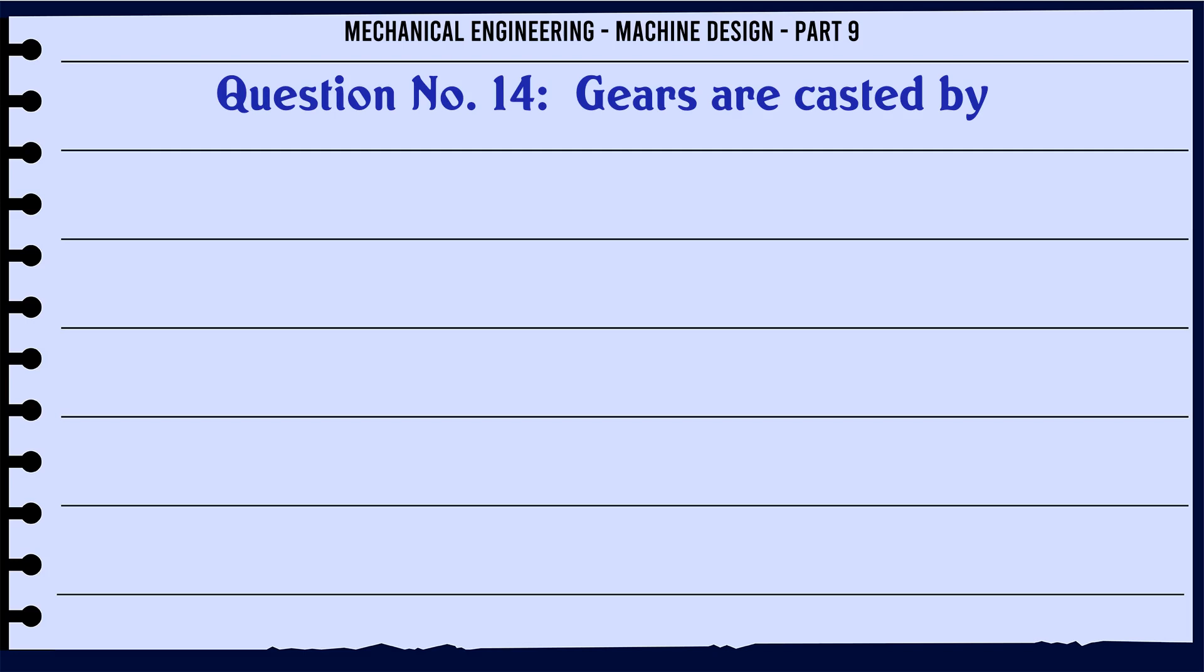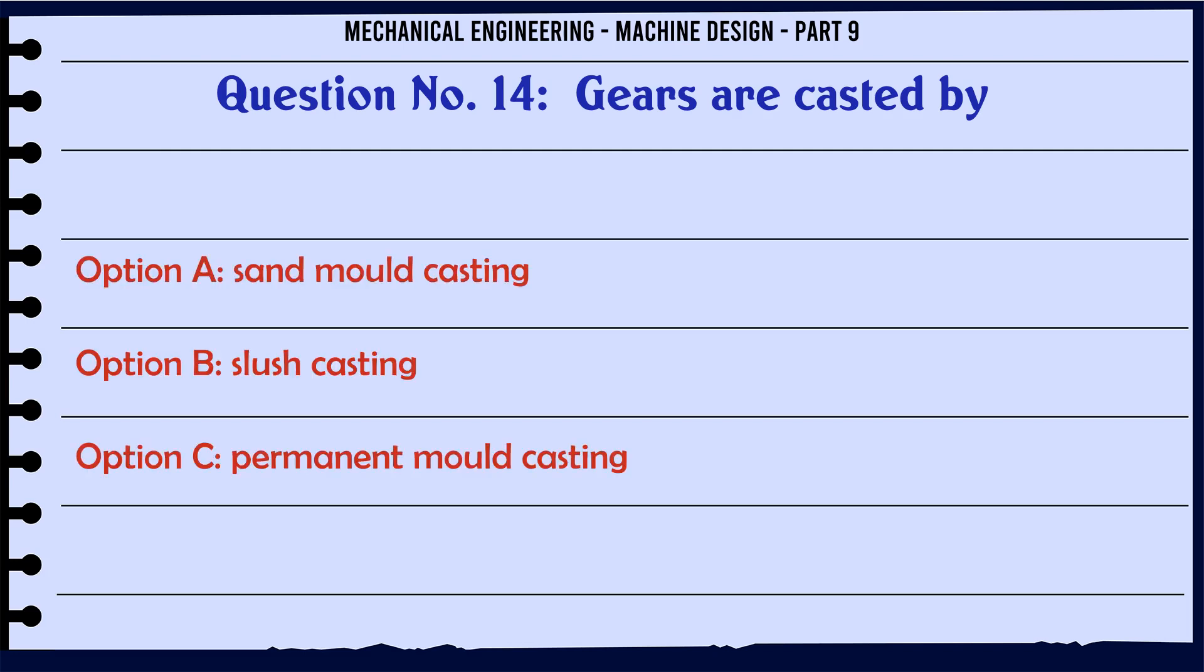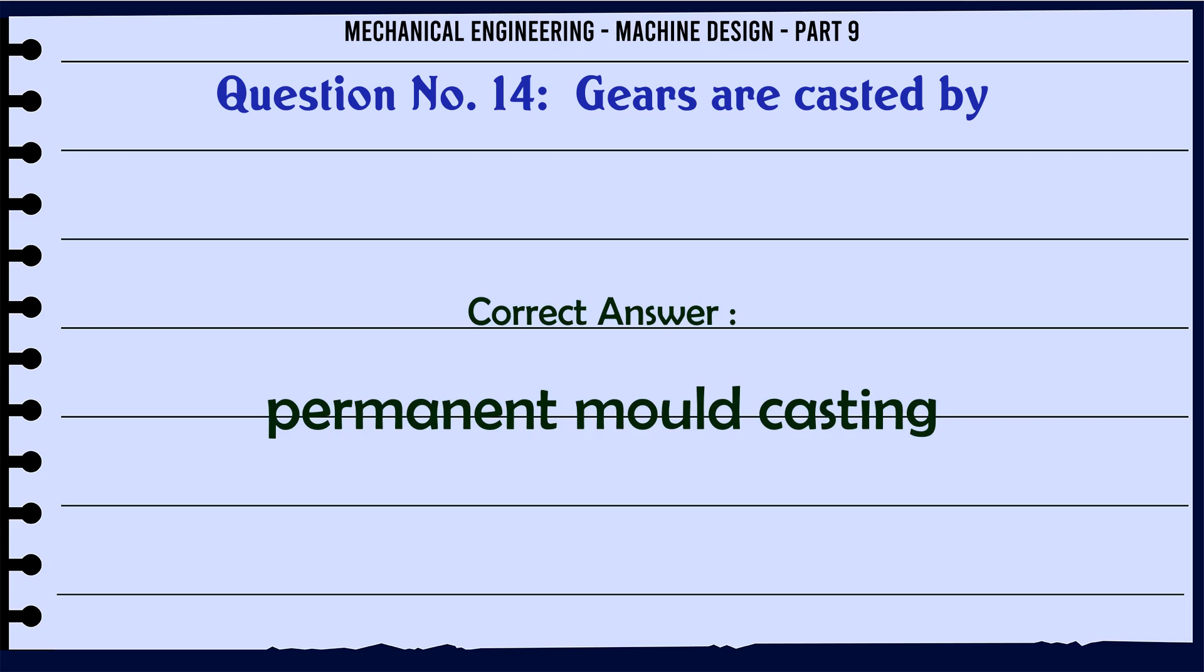Gears are casted by: A. Sand mold casting, B. Slush casting, C. Permanent mold casting, D. Centrifugal casting. The correct answer is Permanent mold casting.